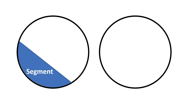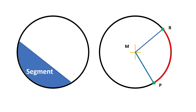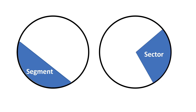A sector is a figure formed by two radii and the arc intercepted by the radii. Remember that a radius — or radii, which is plural — are straight lines that connect the center of the circle with a point on the circle itself. This is radius MP, this is radius MR, and this is the arc that intercepts the two radii. This is a sector.